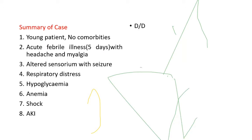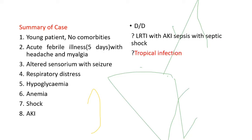Summary of the case: a young patient, no prior comorbidities, AFI of 5 days with headache, myalgia, altered sensorium, respiratory distress, hypoglycemia, anemia, shock, and acute kidney injury. The differential diagnoses included LRTI with AKI, sepsis with septic shock, or a tropical infection — malaria, dengue, leptospirosis, scrub typhus, enteric fever, or chikungunya.